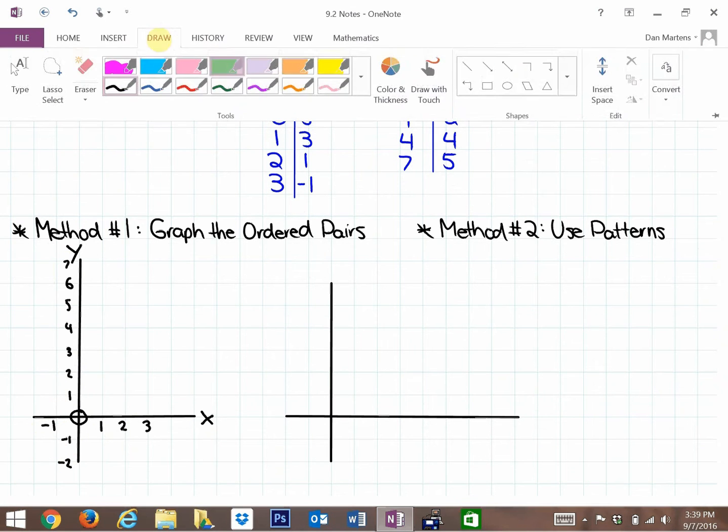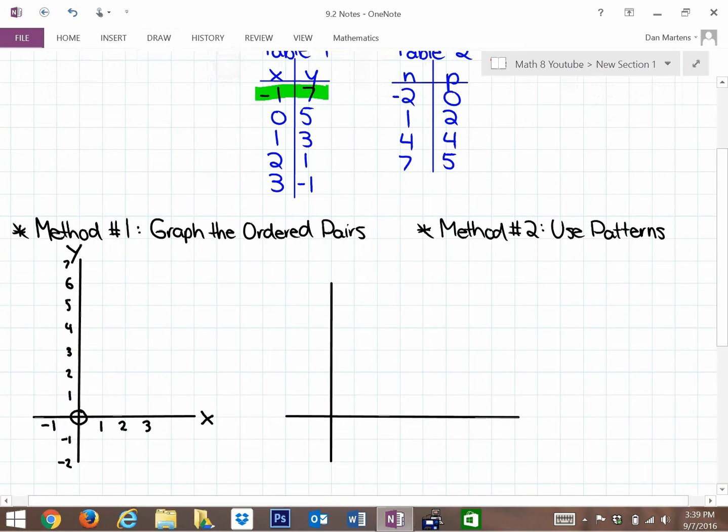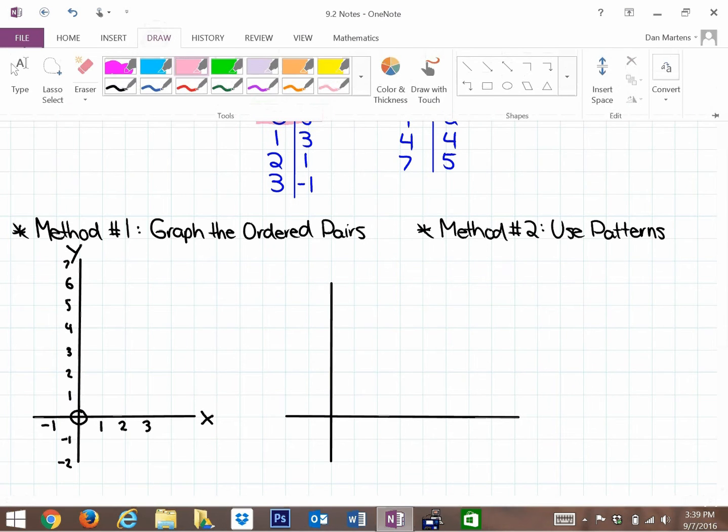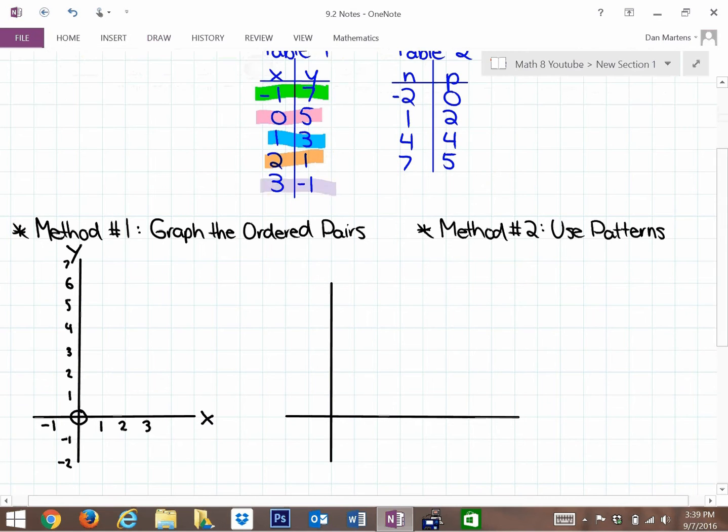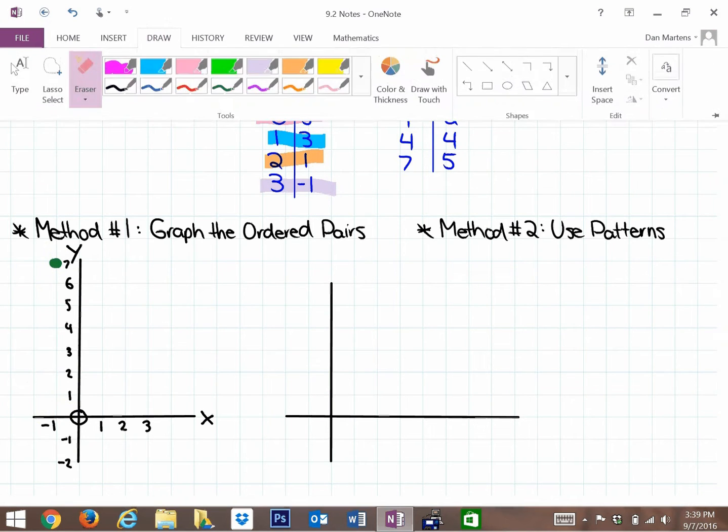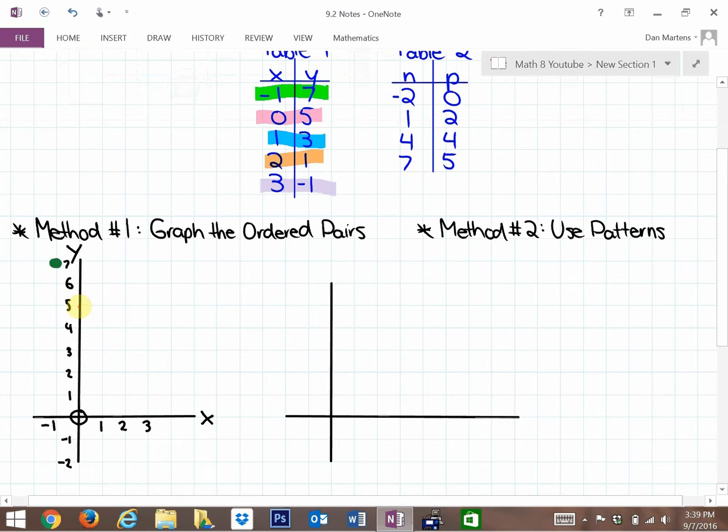So this first point here, I'm going to do the next example a lot more quickly, but we'll do this first one a little bit more slowly. I'm just going to highlight each point, and we'll use color relationships. That first point that's highlighted in green lines up with negative 1 on the x-axis and 7 on the y-axis. Let's go ahead and graph the next point, which is 0, 5.